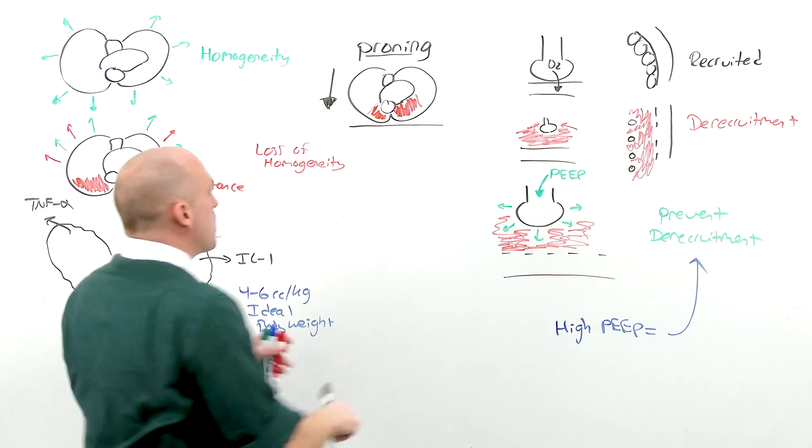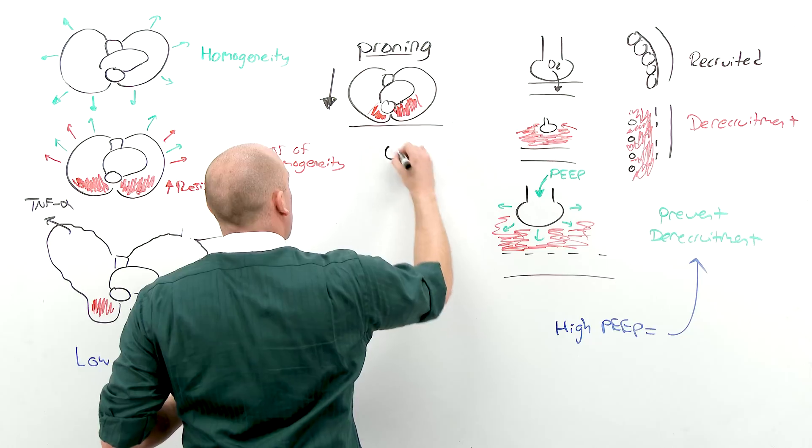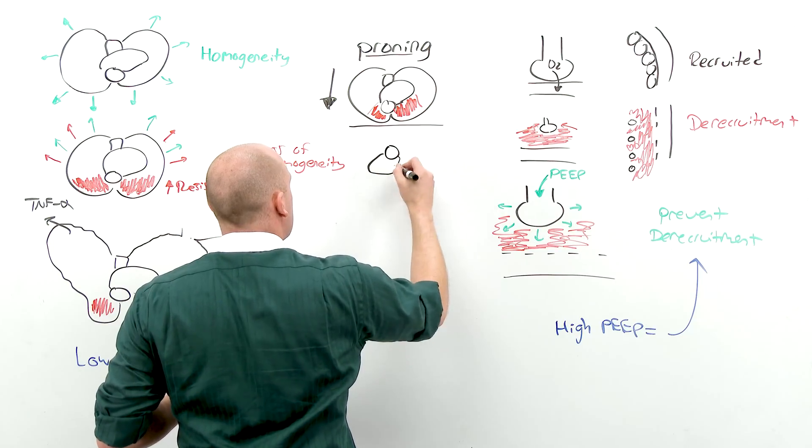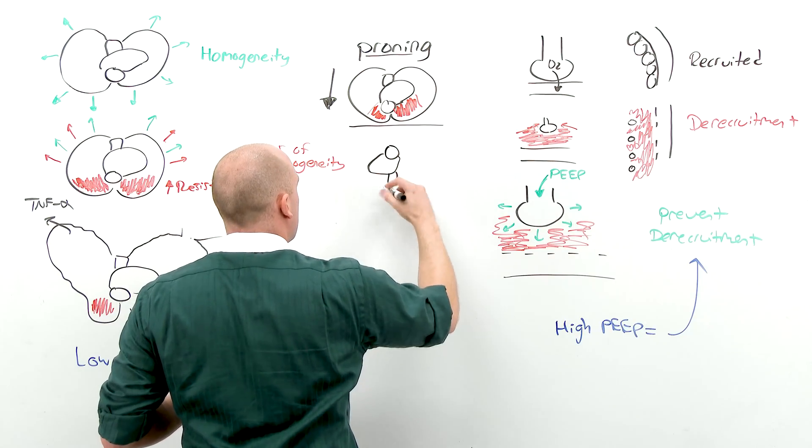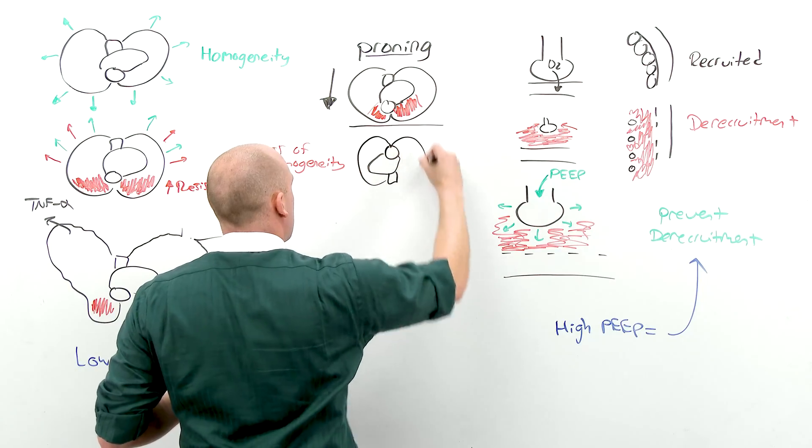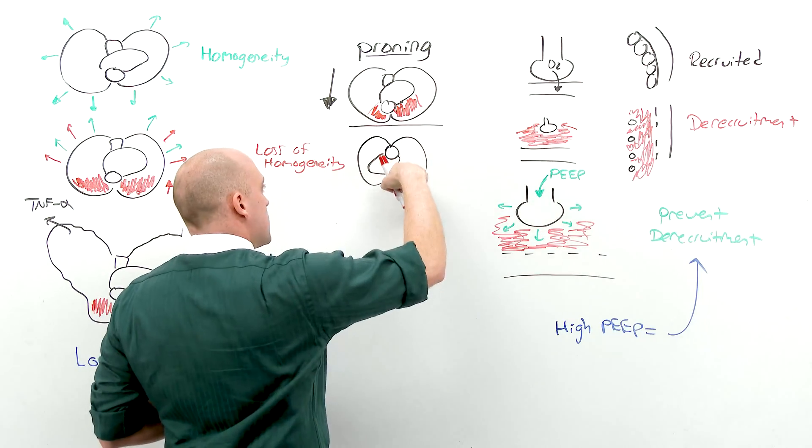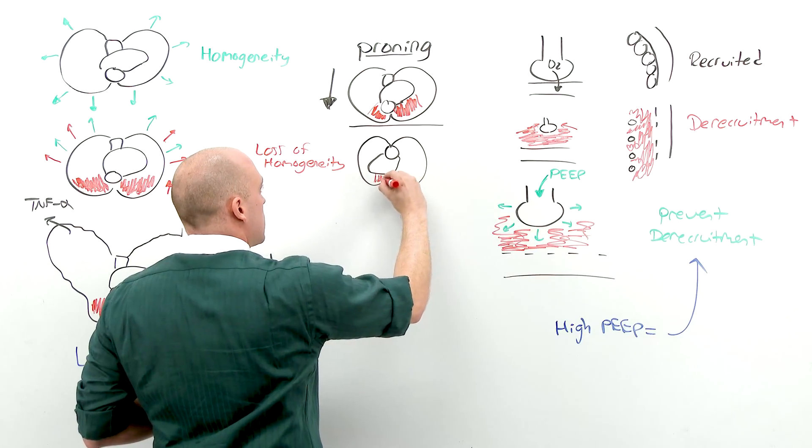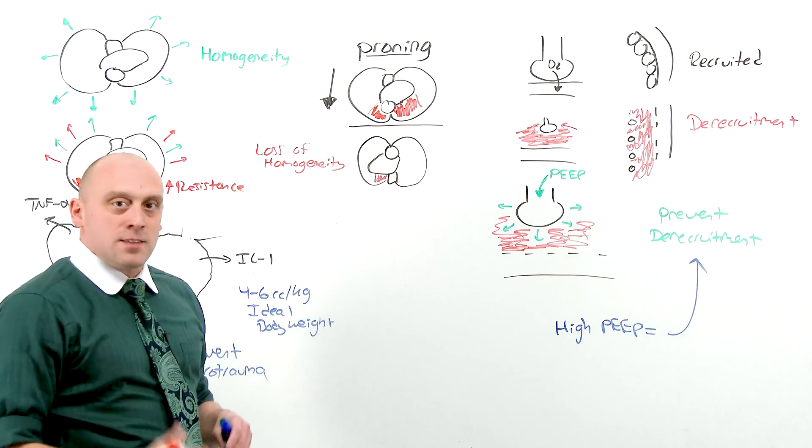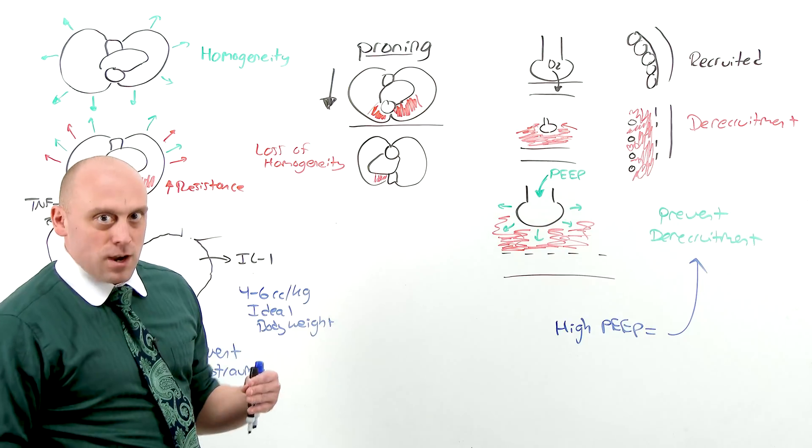If you flip that person over, spine, heart, sternum, left lung, right lung. The heart sits on the sternum, so there's a lot less lung that experiences that force of gravity.